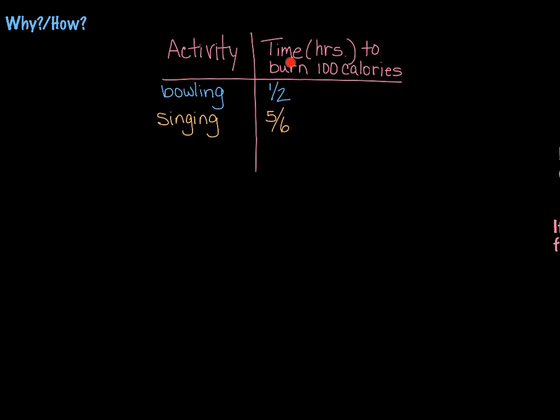And then on the right we have time in hours to burn 100 calories. So you can see bowling is going to be one-half hour and singing is going to be five-sixths of an hour.